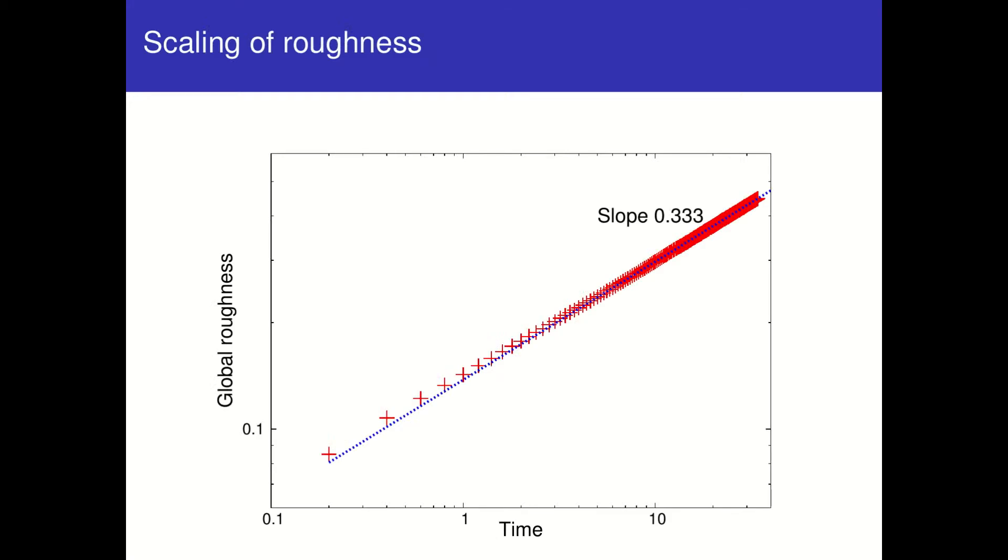Do the balls of all sizes keep that rough look? No, they look smoother as they grow. Roughness can be seen to scale as the radius raised to the power one-third. Such a simple exponent should have a simple explanation.